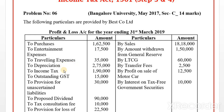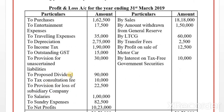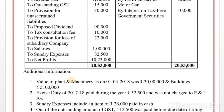Notes and adjustments: Income tax — add. Outstanding GST — ignore. Provision for uncertain liability — add. Proposed dividend — add. Tax consultation fees — ignore. Provision for loss of subsidiary company — add only actual loss amount, not mere provision. Salaries — ignore. Sundry expenses — ignore.